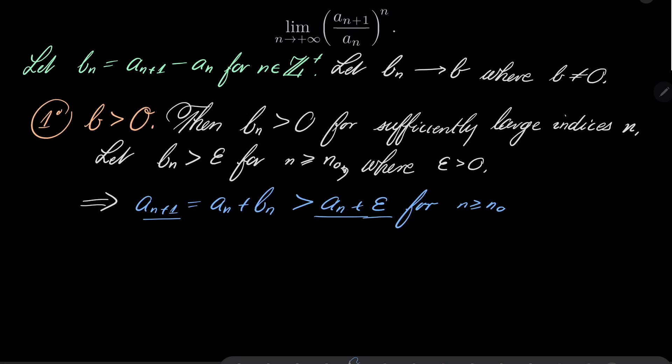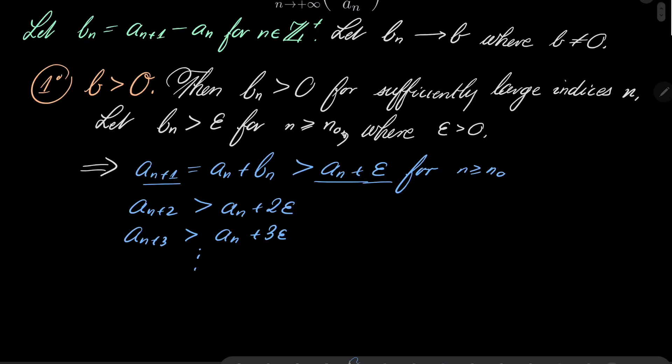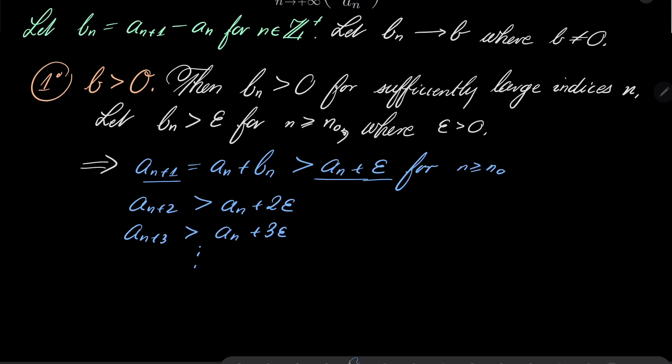Well, since it's greater than epsilon, we can iterate this: a_{n+2} is going to be greater than a_n plus 2 epsilon, a_{n+3} is going to be a_n plus 3 epsilon, and so on. Since epsilon is positive, we see that this sequence is diverging to plus infinity. So a_n, from n_0 to infinity, is strictly increasing and diverges to plus infinity.